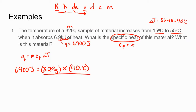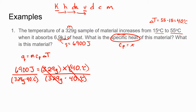To solve for x, we divide both sides by mass and change in temperature. The mass cancels, leaving joules divided by grams times Celsius. Make sure your calculator multiplies before it divides by putting the denominator in parentheses: 6900 divided by (329 times 40). We need two significant figures because our heat and temperature only had two, so x equals 0.52 joules per gram Celsius.